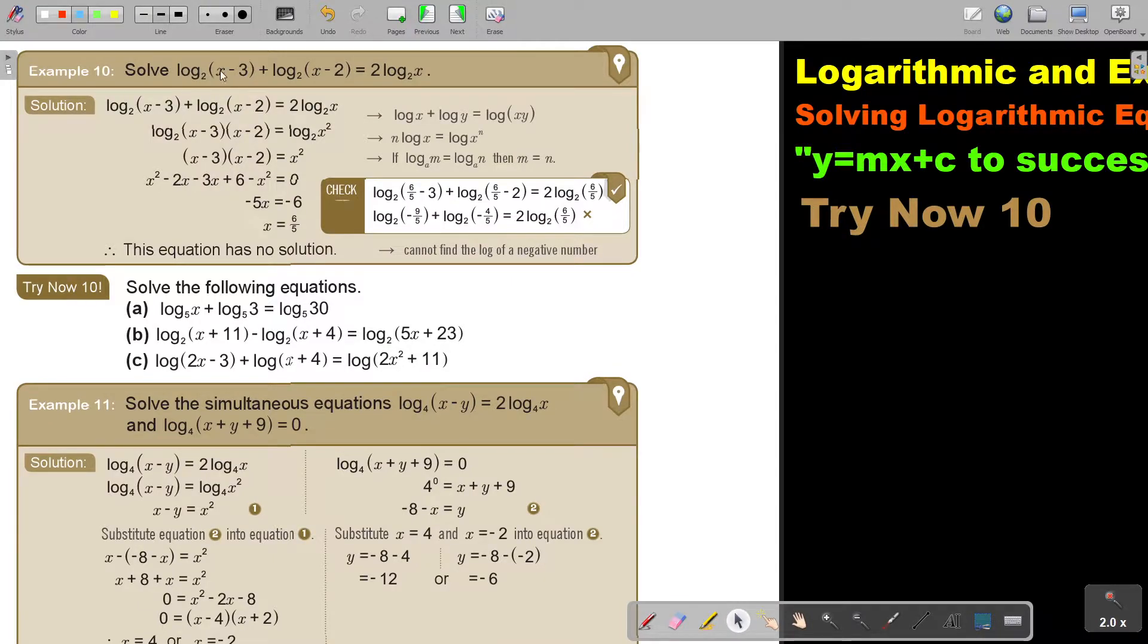Solve log base 2 of (x minus 3) plus log base 2 of (x minus 2) equals 2 log base 2 of x. Very important: all the bases must be the same. Now we start.